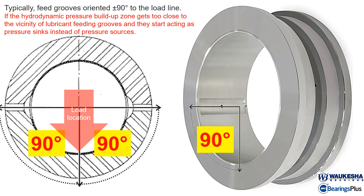Typically, the feed grooves are oriented 90 degrees away from the load line. If the feed grooves are too close to the load line, they start acting as a pressure sink instead of a pressure source.